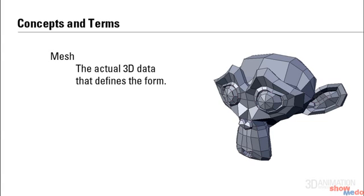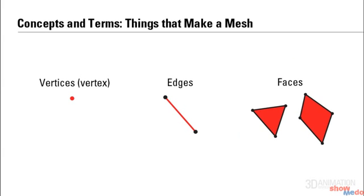Now onto some more Blender-specific terms, which are actually used elsewhere as well. You have a mesh, and that is the actual 3D data that defines the form. A mesh is made up of three things. You have a vertex, which is a single point in space that has no size. You have an edge, which is also infinitely thin, which is just a line that connects two vertices together. And then you have faces — this is when a mesh starts to create a 3D solid form, when you take the space between edges and fill it in as a face. A face can be either a triangle or a quad.